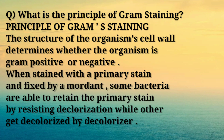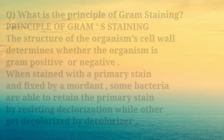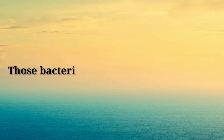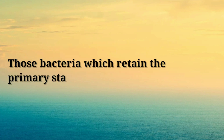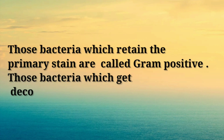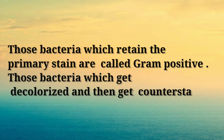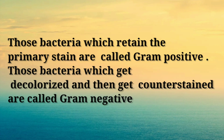When stained with a primary stain and fixed by a mordant, some bacteria are able to retain the primary stain by resisting decolorization, while others get decolorized by the decolorizer. Those bacteria which retain the primary stain are called gram positive, and those which get decolorized and then get counter-stained are called gram negative.